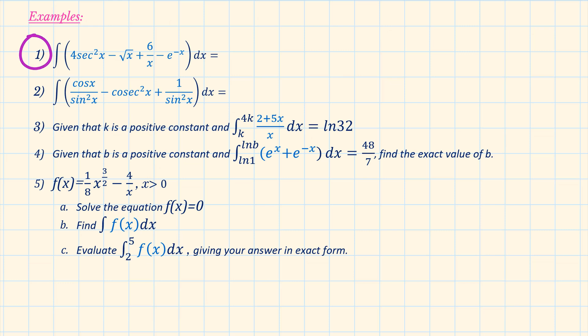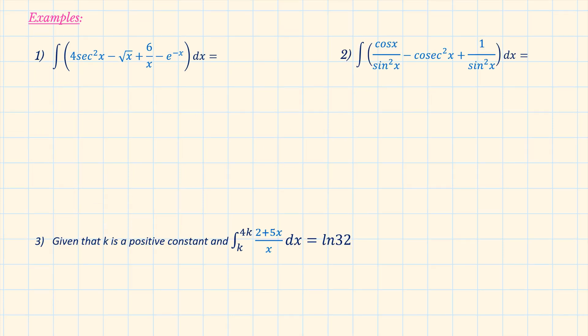Question 1: what is the integral of 4 sec squared x minus square root of x plus 6 over x minus e to the power of minus x with respect to x? Pause the video to have a go, then come back and see if you got it right. At any point throughout this video, if you have any questions, post in the comments below and I will help you. When we have an integral with several terms separated by minus or plus, go ahead and integrate them separately.